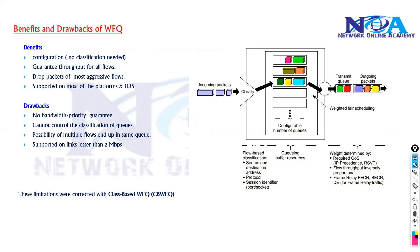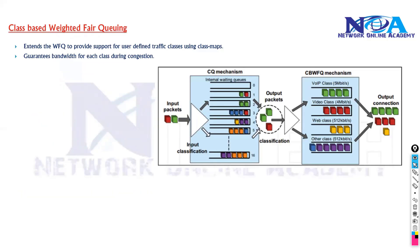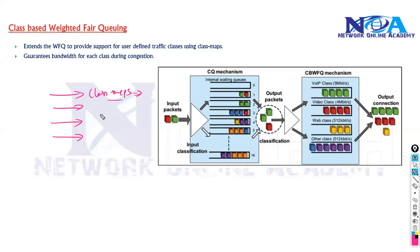With CBWFQ, we can define our own queues — we create our own classes with separate queues. These are configured using class maps for classification, and each queue can be configured with specific parameters. For example, queue one (class one) can hold VIP or SQL traffic.